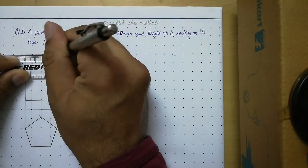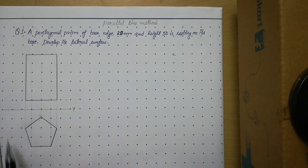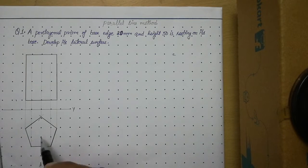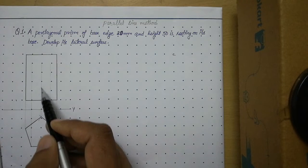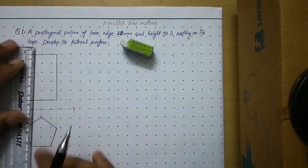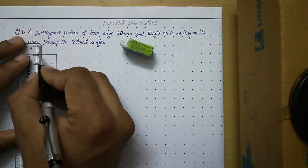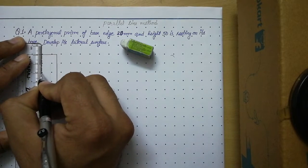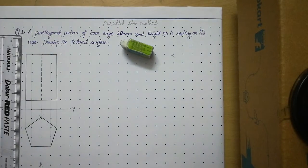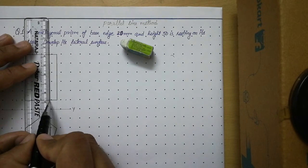Now observe the top view carefully. The observer is standing on one side, so when looking at the prism from that side, one particular edge cannot be seen. For that projector, we draw the edge as hidden in the front view. To draw a hidden edge, use a dash medium line — the ratio is: dash of 3 mm and gap of 1.5 mm. The other two edges will be visible, so make those projectors thick.